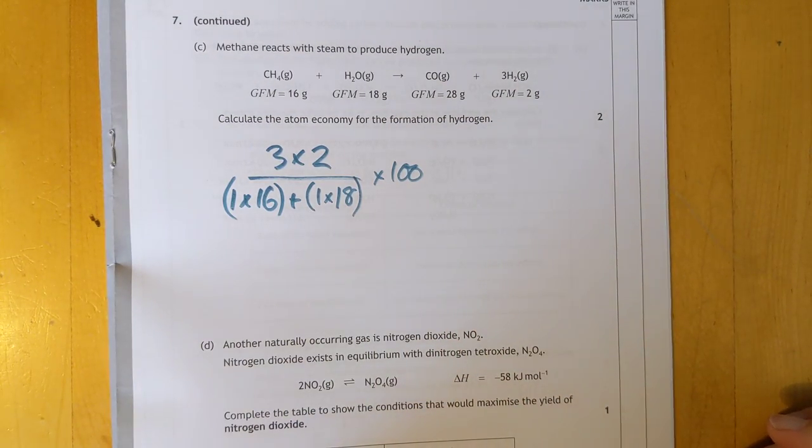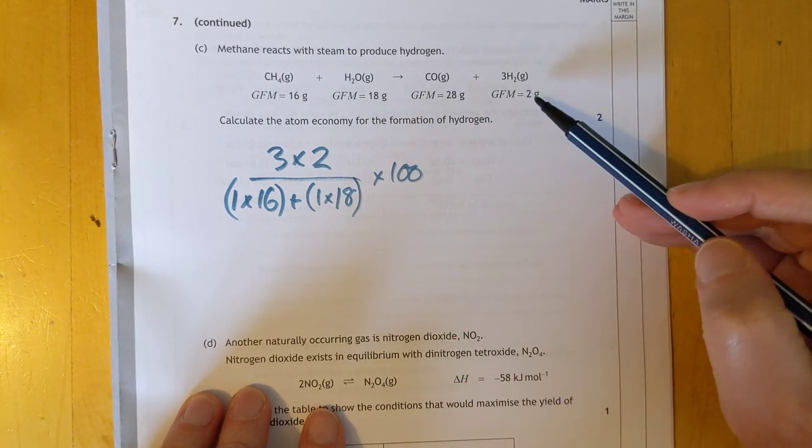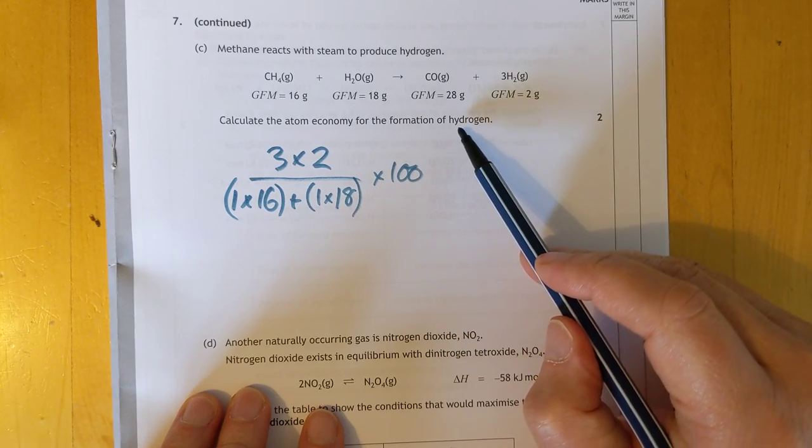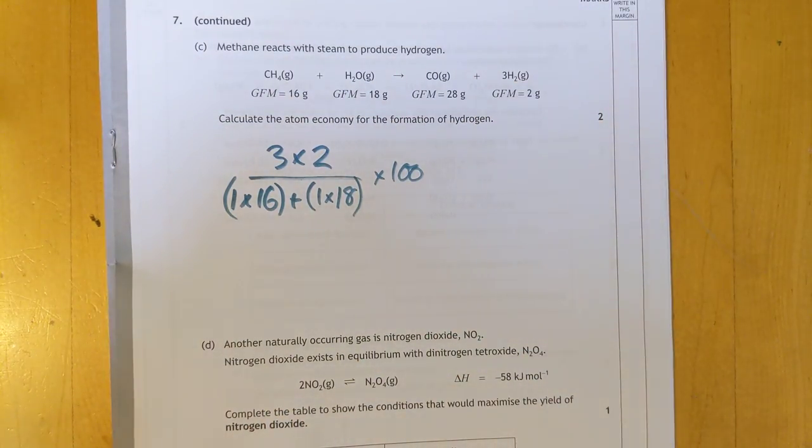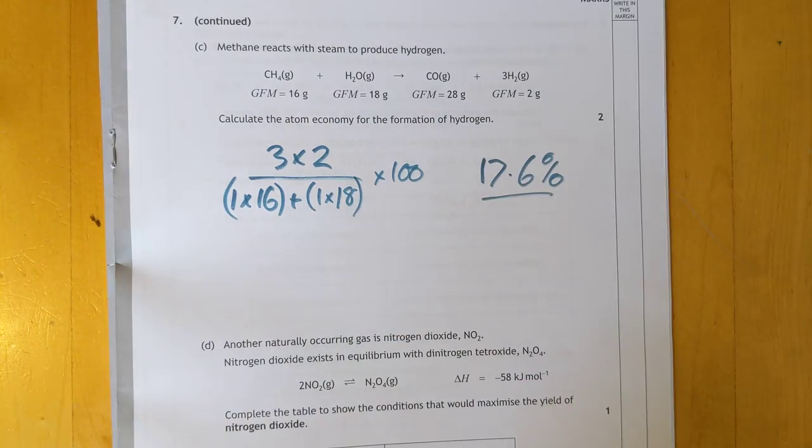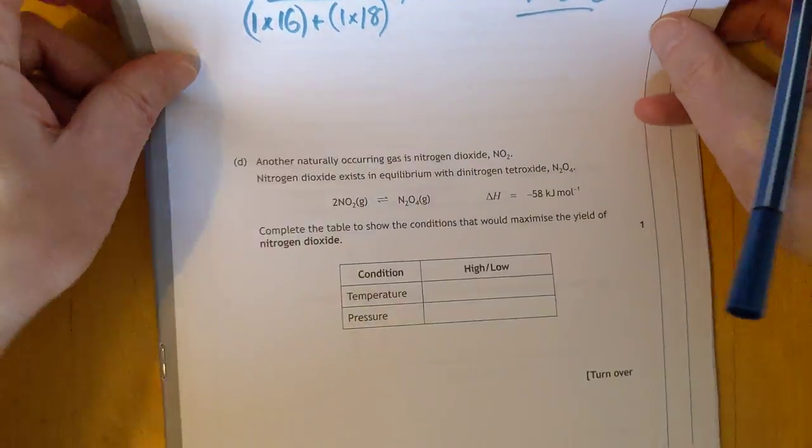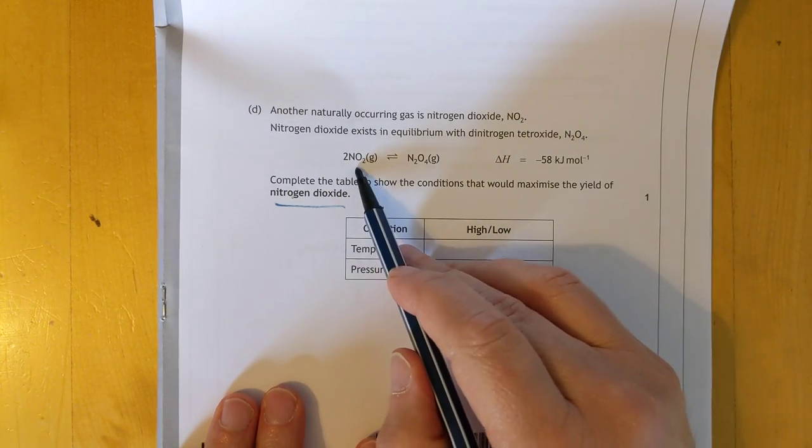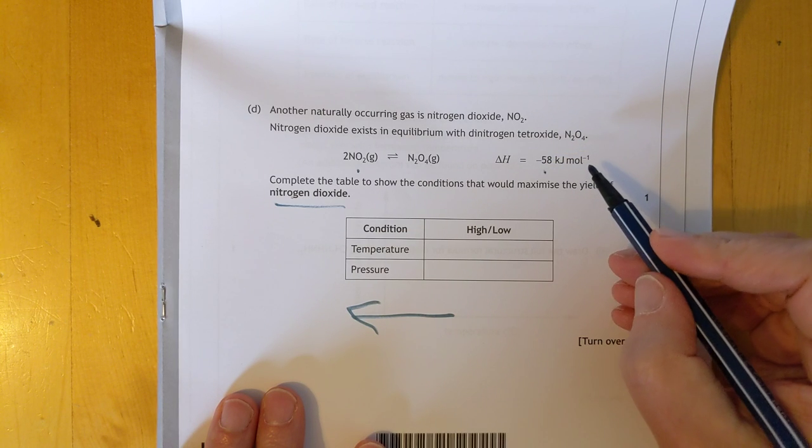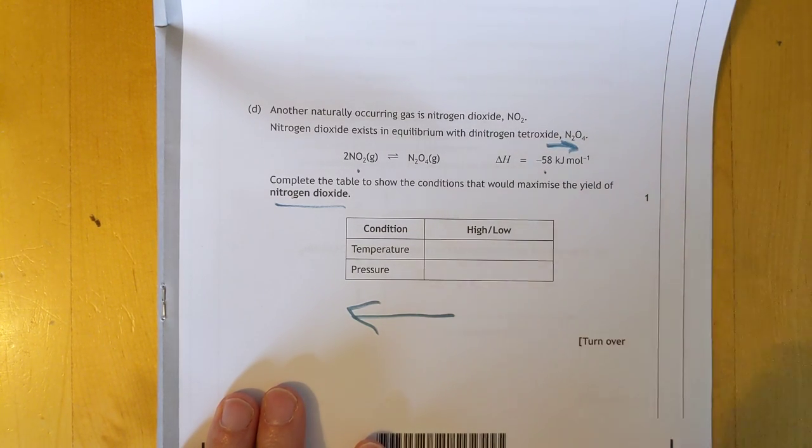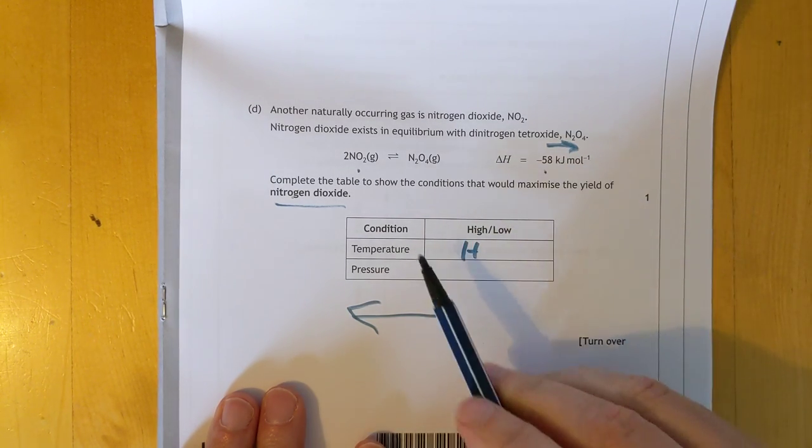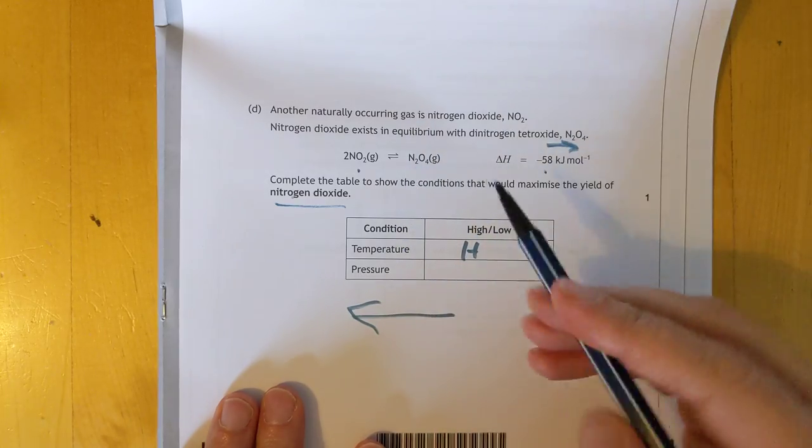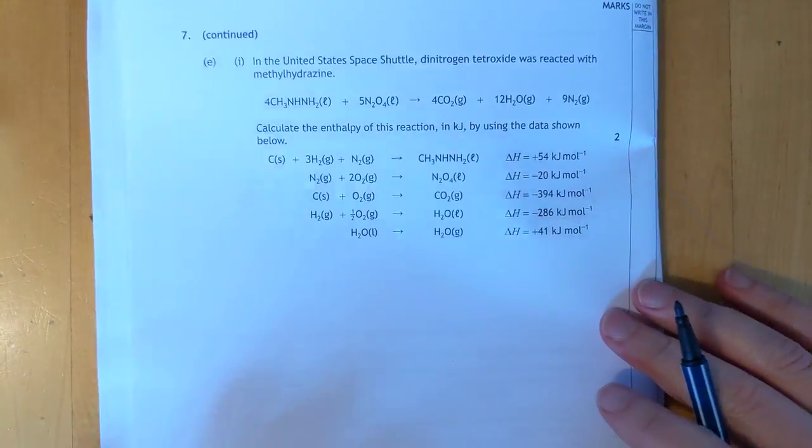Atom economy. Right. Have I missed something here? Or is this quite as easy as it looks? Three lots of hydrogen you're making on the right-hand side. So total mass of desired products is just hydrogen divided by the total mass of all the reactants. Times 100. That seems too easy for two marks. Tell me in the comments if I've missed something, which is entirely possible. 17.6%.